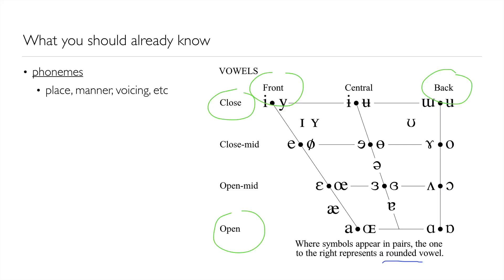These distinctive features — height, front-back, and rounding — will become useful later on in unit selection, where we have to decide how similar two sounds are.